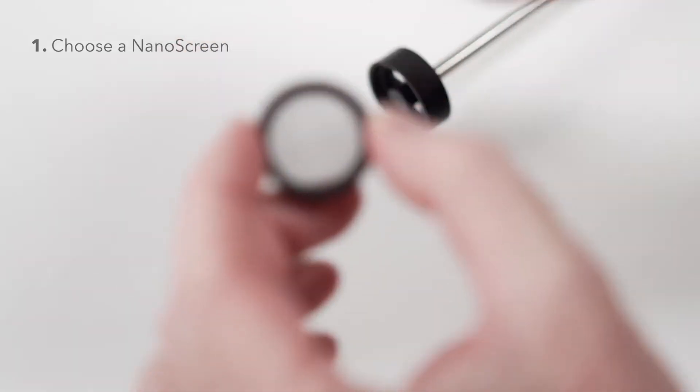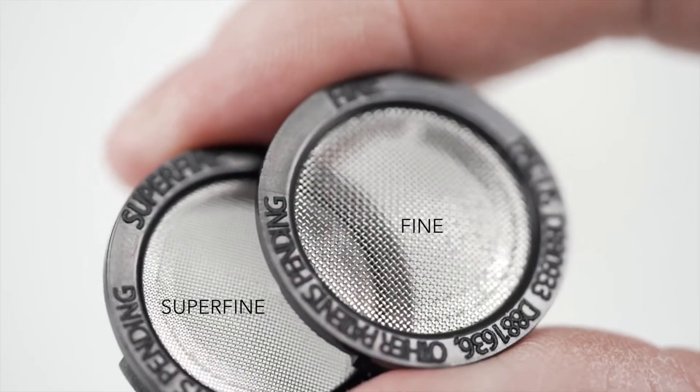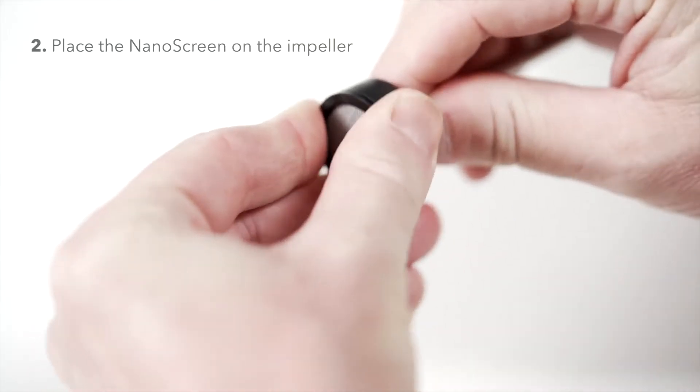First select the nano-screen. The super-fine will create the finest possible micro-foam, while the fine will create a slightly thicker foam. Snap the nano-screen onto the impeller.